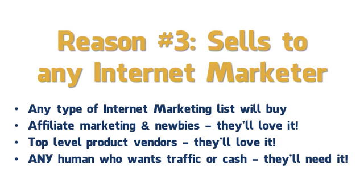Third, any kind of list will respond. If you've got a list of 100,000 affiliate newbies in the biz-op space, tell them what this thing does and they'll want to buy it. On the flip side, if you've got 50 ultra-targeted eight-figure-a-year super vendors, they'll buy 10 copies and give them to their virtual assistants. It doesn't matter how your list is positioned — whether it's about list building or Facebook, a Warrior Special Offer, JVZoo, or a ClickBank list — anyone interested in generating traffic, sales, commissions, and general internet marketing, when they see what this does, will want to buy it.